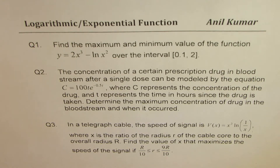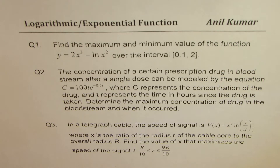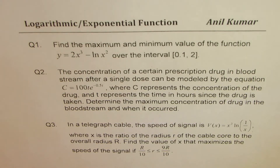Question number three: in a telegraph cable, the speed of a signal is v(x) = x²·ln(1/x), where x is the ratio of radius r of the cable core to the overall radius R. Find the value of x that maximizes the speed of the signal if r is between one-tenth and nine-tenths of capital R. I'd like you to pause the video, copy these questions, answer them one by one, and then look into my solutions.